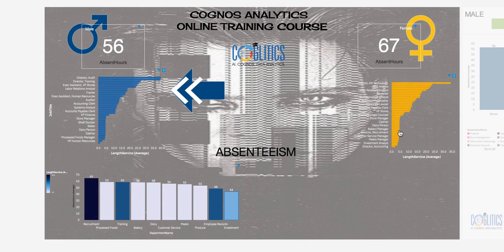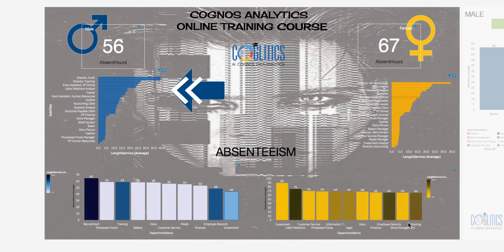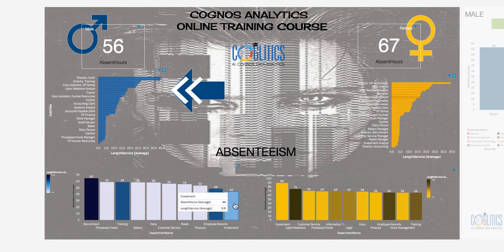I click the next button and I get the same job title by length of service — the Director of Technology and the HR Analyst have spent the most time at the company. Clicking the next marker, I get the same department visualization for females. With the males, assuming this was real data, this is fascinating: males are absent on average 44 hours in the year, but females appear to be absent a lot specifically in the Investment department — this is a key insight.